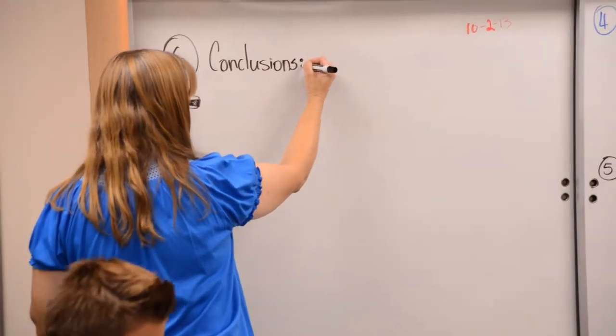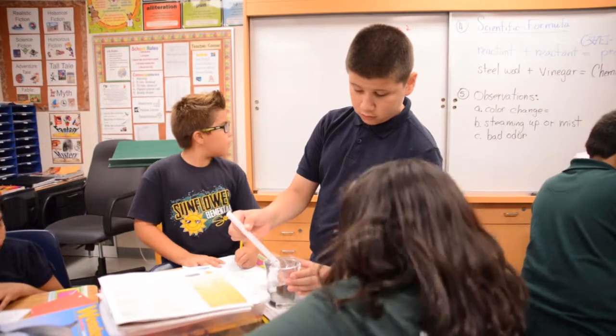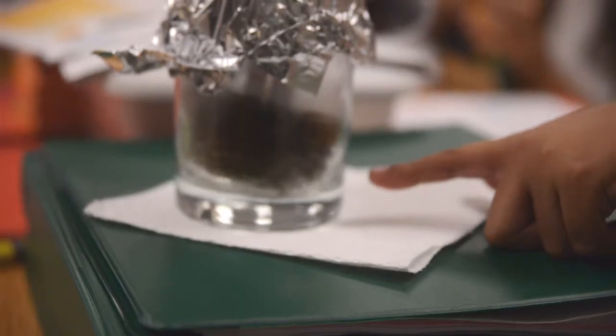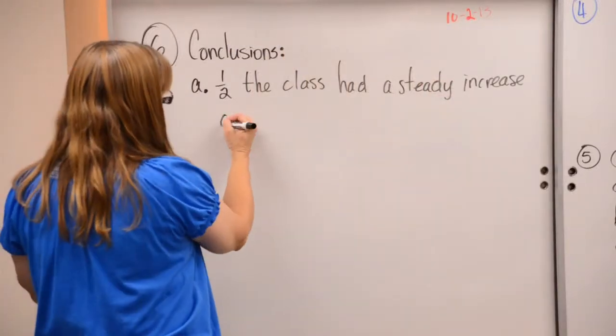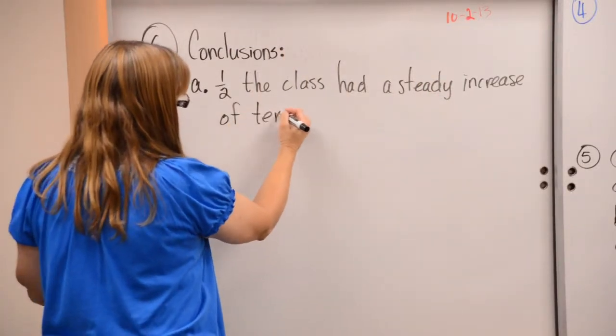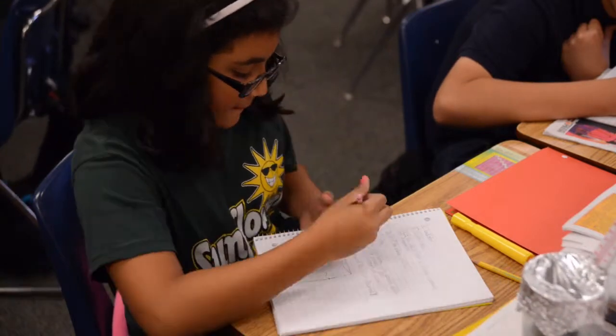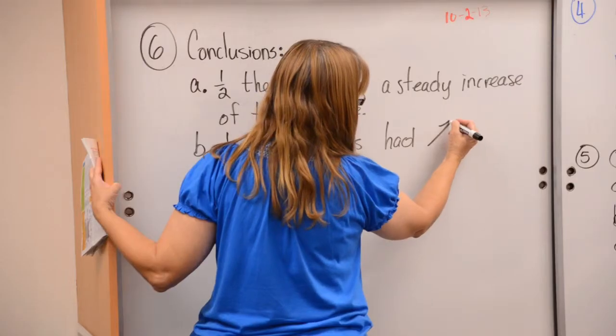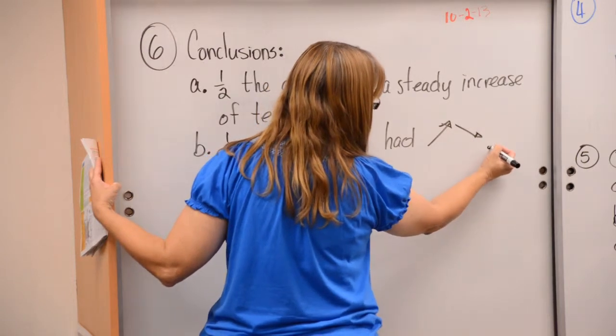This is very important that you write conclusions. Half the class had a steady increase of temperature. Half of the class had up and down like this. I'm going to say, why?